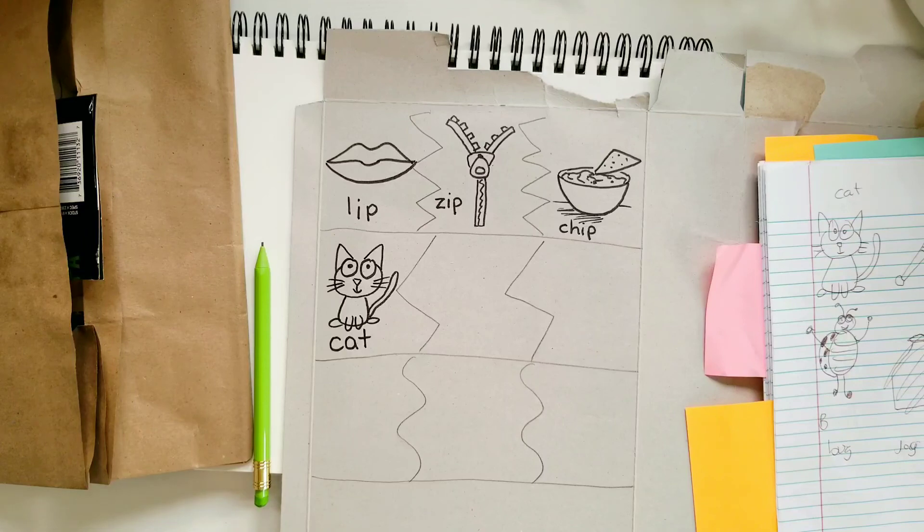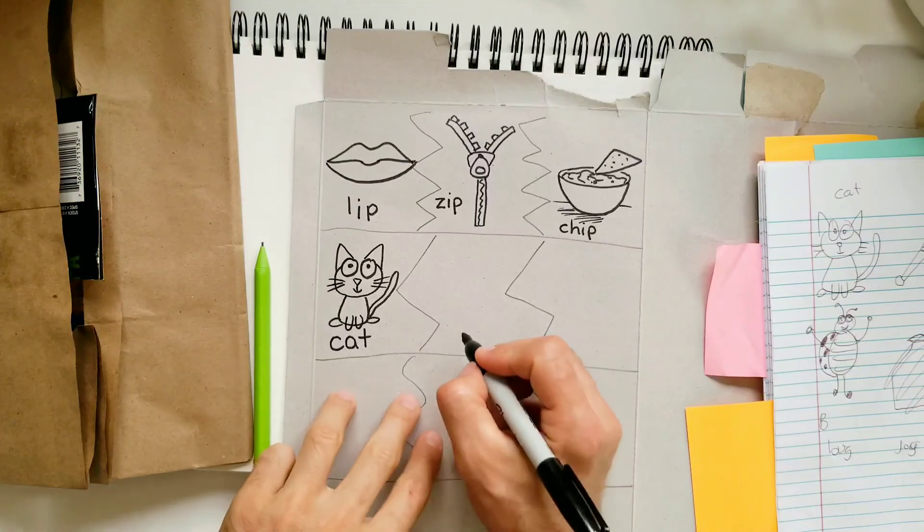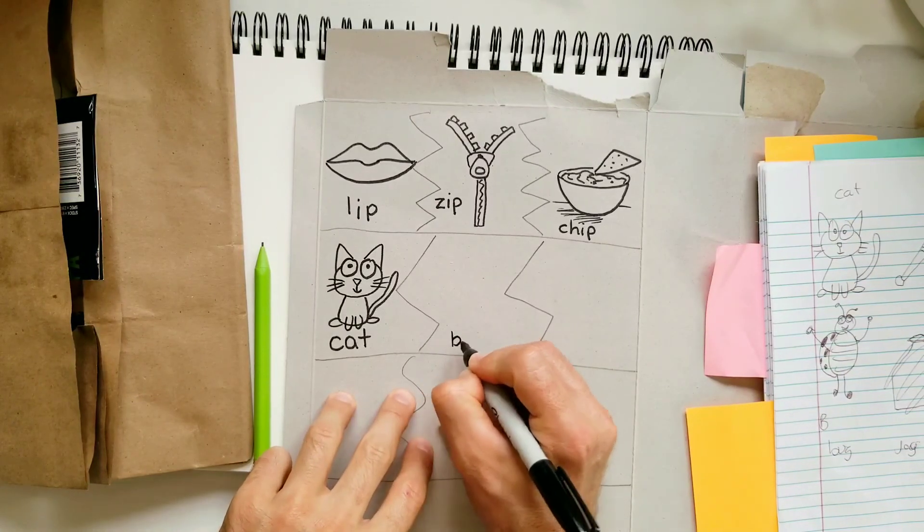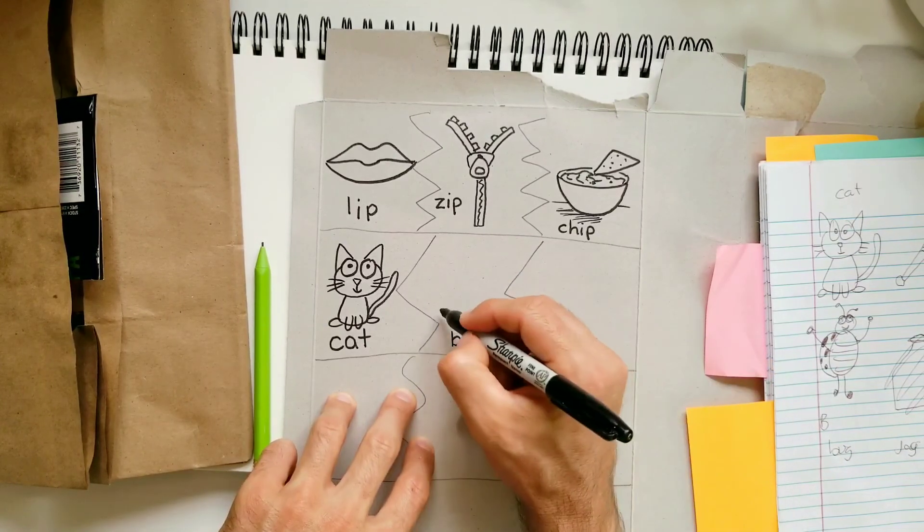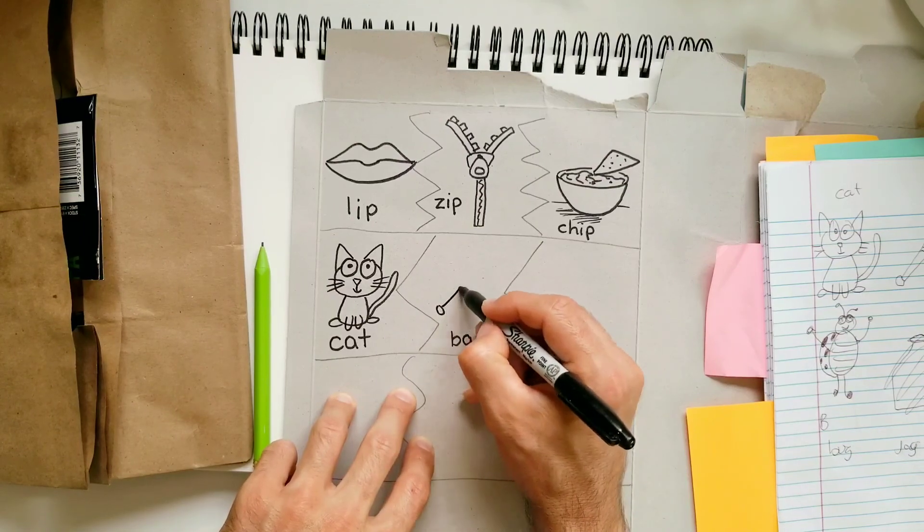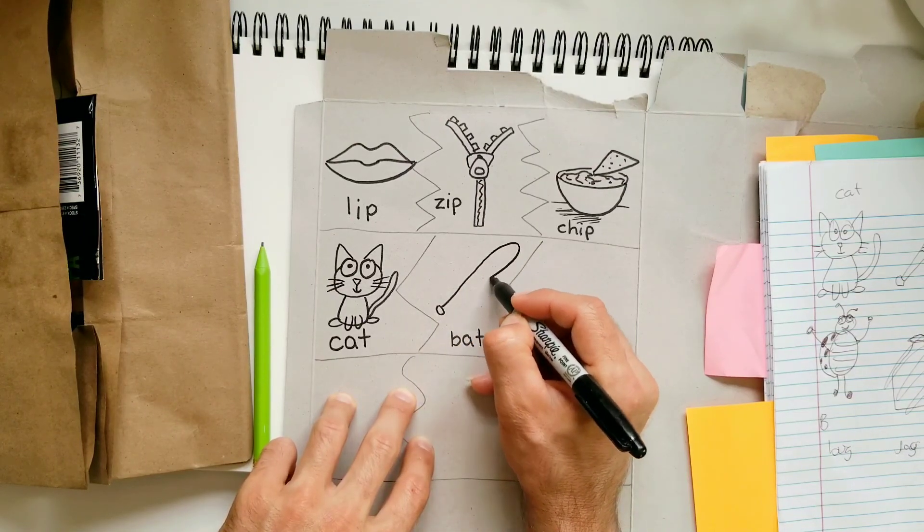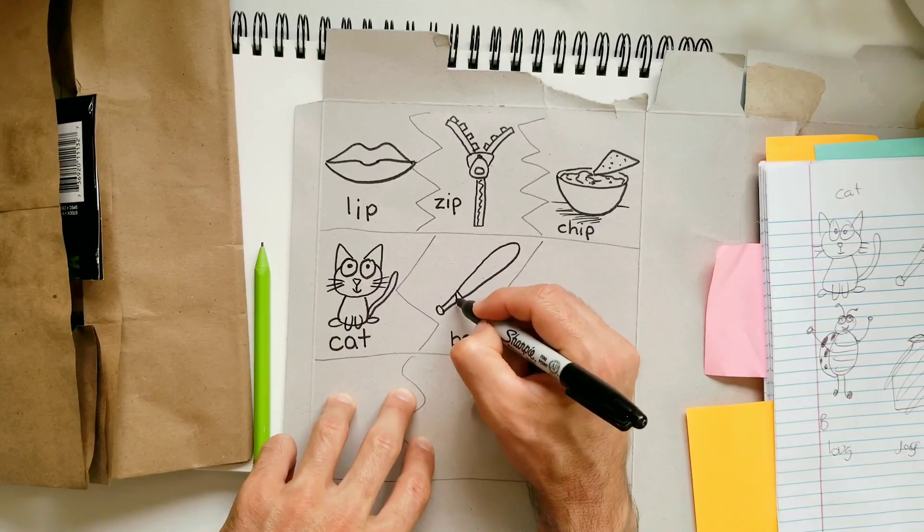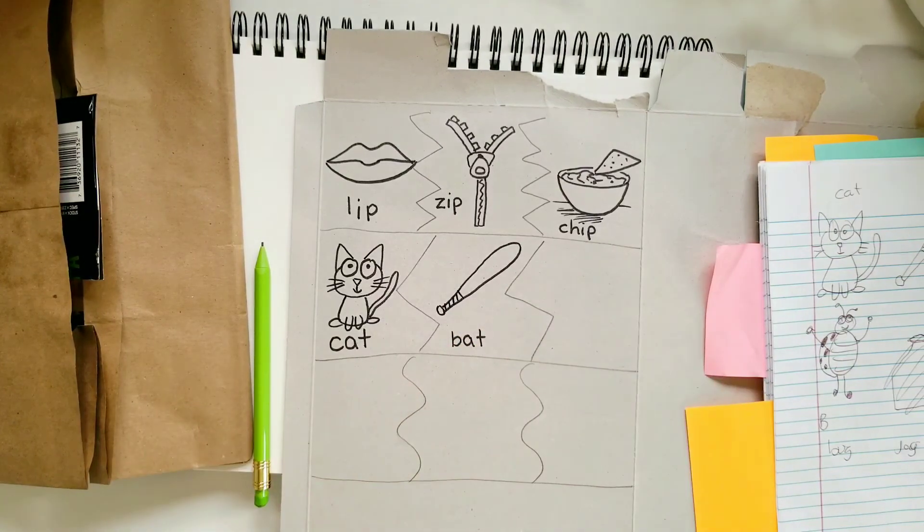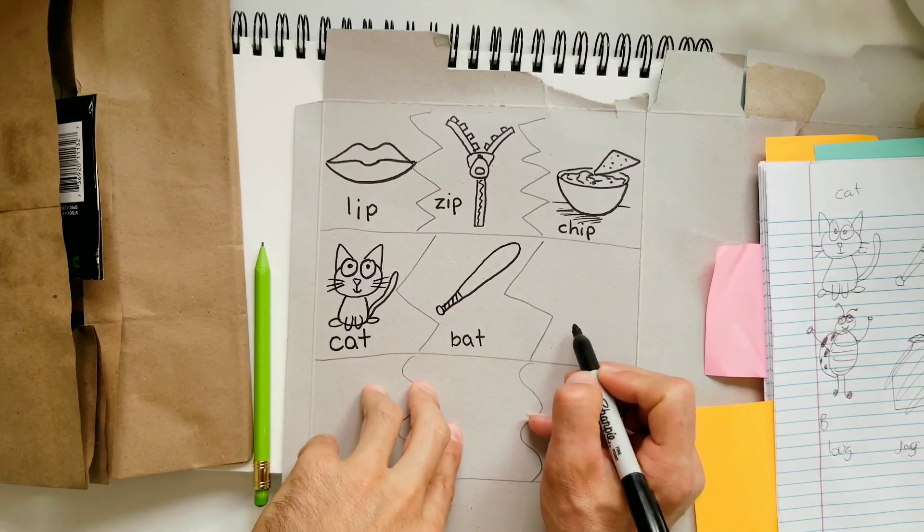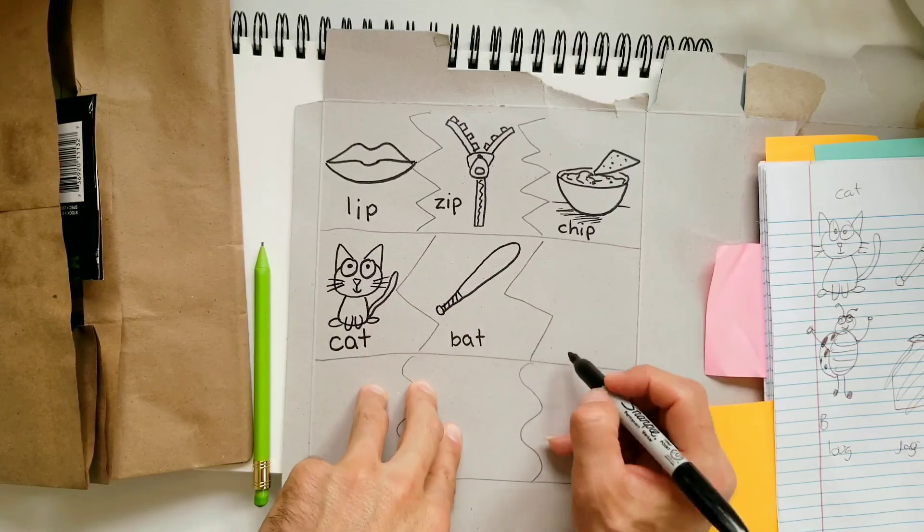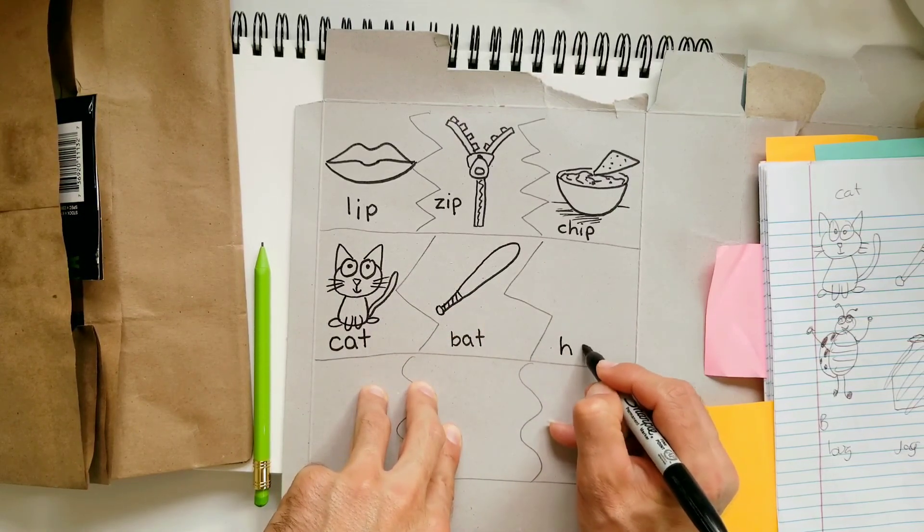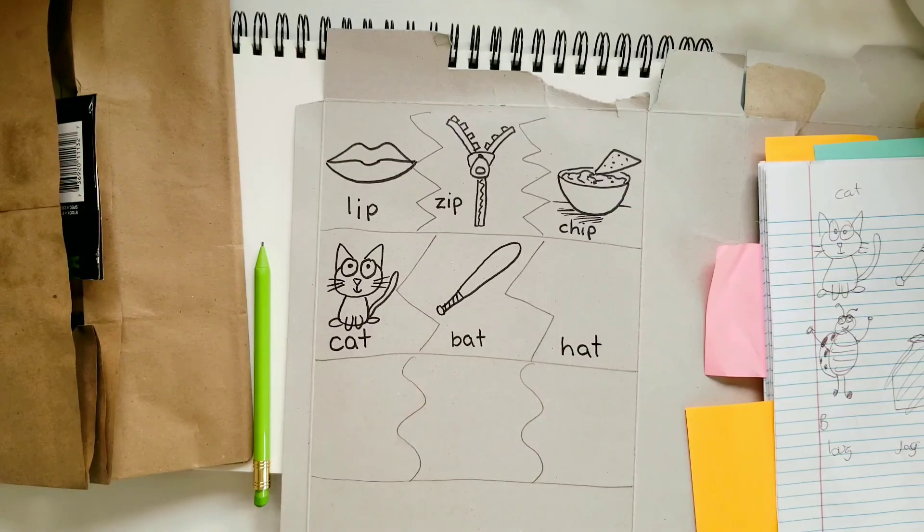Now we need the next word: bat. So like a baseball bat. And then the last one over here on this side, because we're doing three rhyming words, so lip, zip, chip, cat, bat, hat.